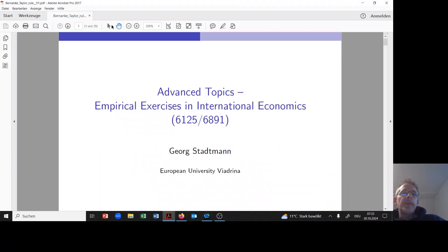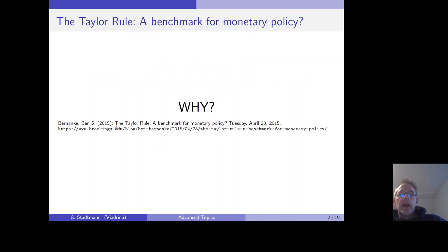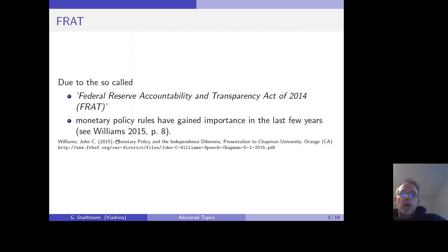It seems to be the case that in 2015 the Taylor rule is still relevant. Bernanke writes about this topic, so let's have a look at this paper. In the first step, let's ask the question: why is the Taylor rule, which was invented in 1993, still relevant today? Williams argues that this is due to the so-called Federal Reserve Accountability and Transparency Act of 2014.